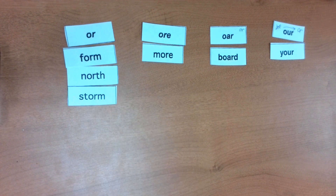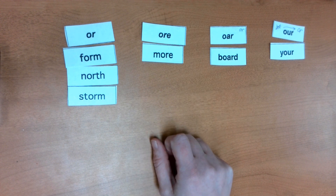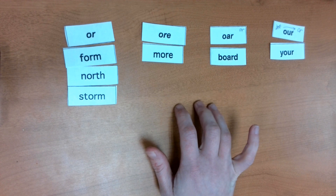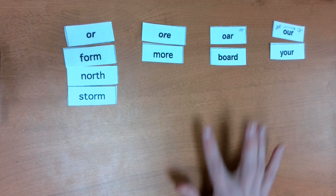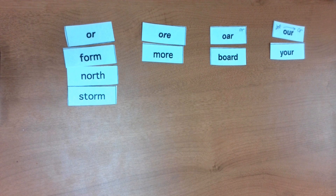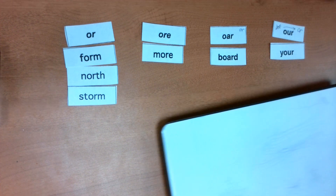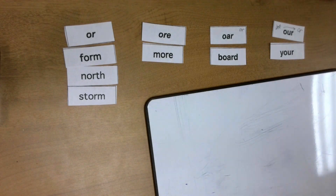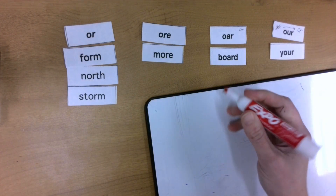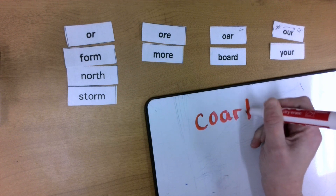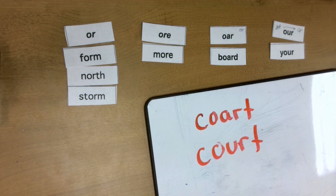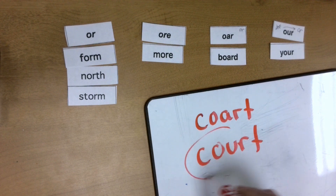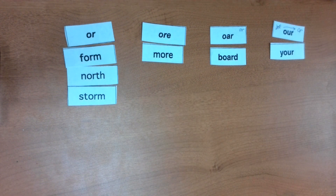My next word is COURT — like in the volleyball court or the basketball court. Tap that out with me. COURT. This one's an unexpected one. Sometimes you might even spell it two different ways. I'm going to write COURT with an O-A-R, or COURT with an O-U-R. Which one looks most familiar to you? You're thinking this one — you've got it! Like a basketball court.